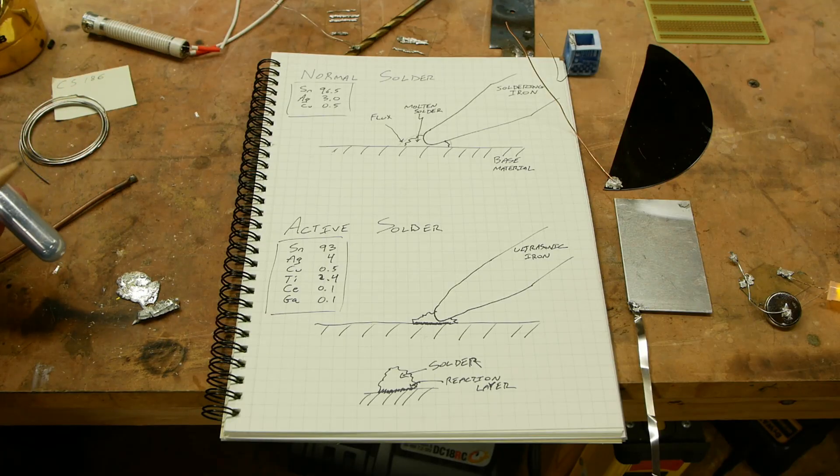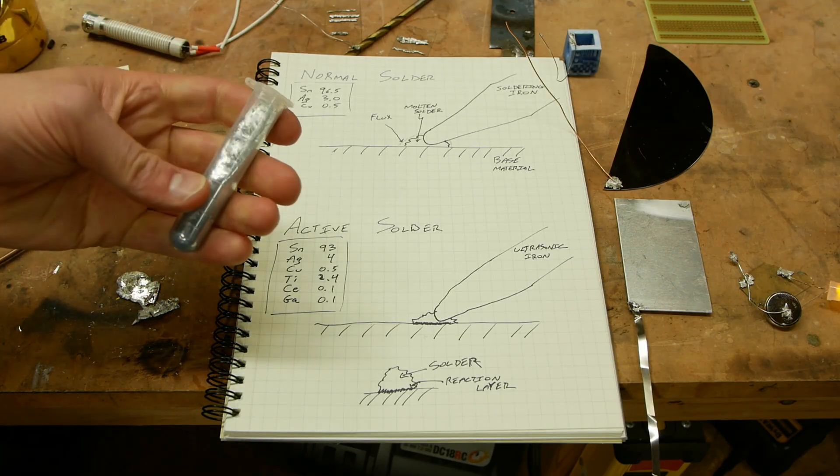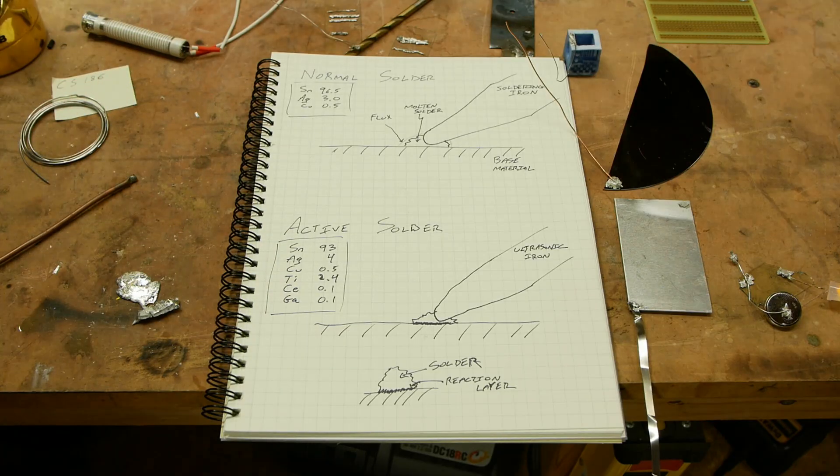The only problem is the melting point of gallium is way too low. If you hold this in your hand even, it turns to a liquid. And the melting point of indium is also kind of low. And so you need to add something to it to raise the melting point to get a practical solder like lead or tin or something. And when you do that, it's not as active anymore.